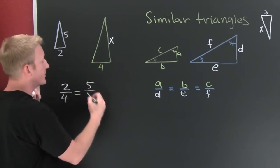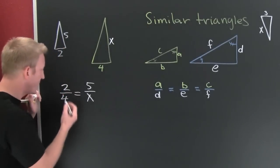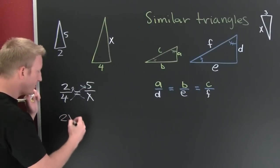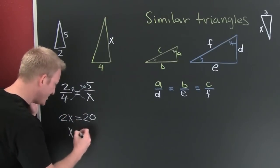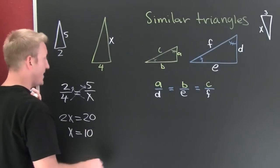five is to x. Yes, finish him! Okay, so then a little bit of this, a little bit of that. I'm gonna have 2x is 20. Finish him! It's 10. Very nice, so then the